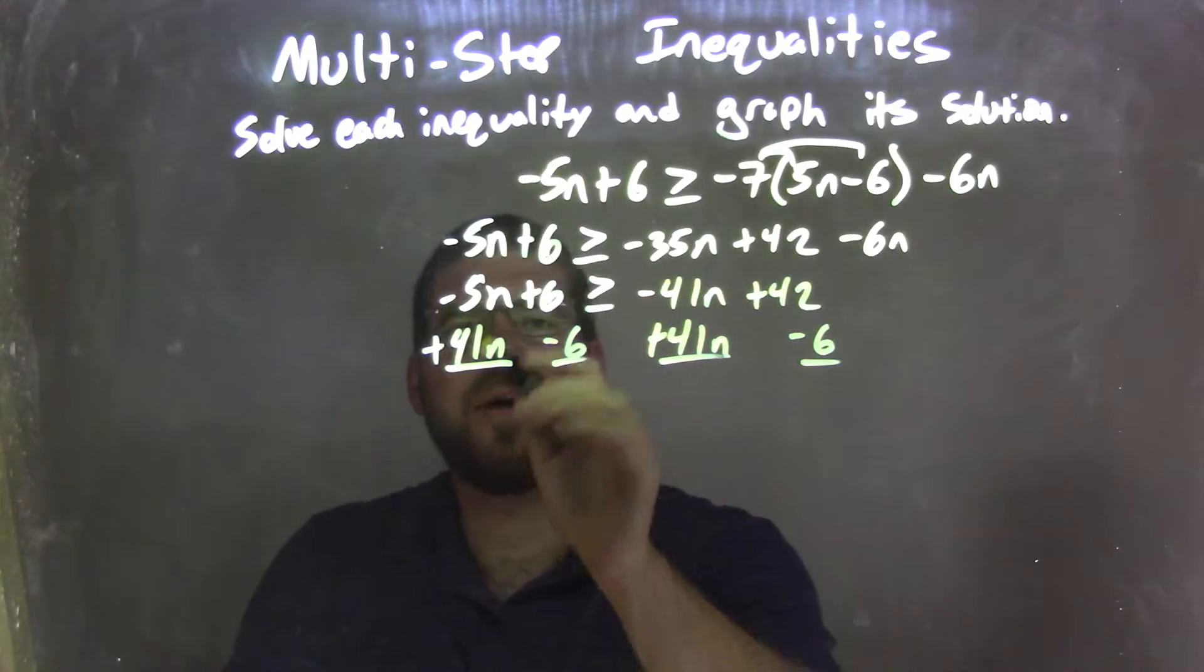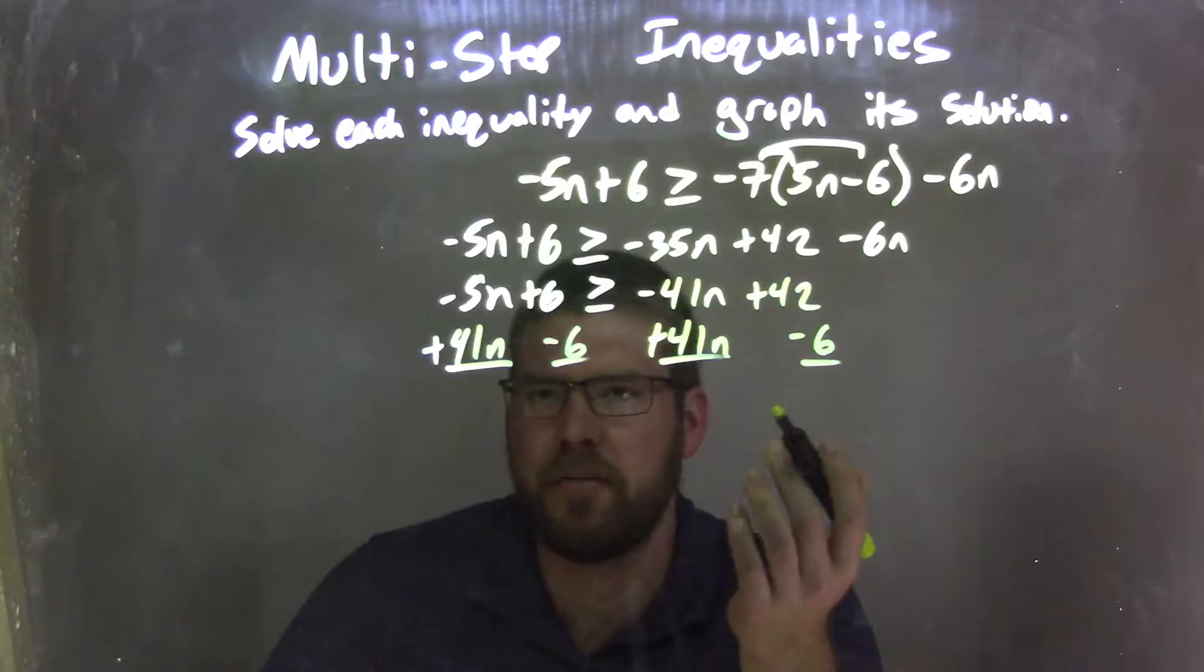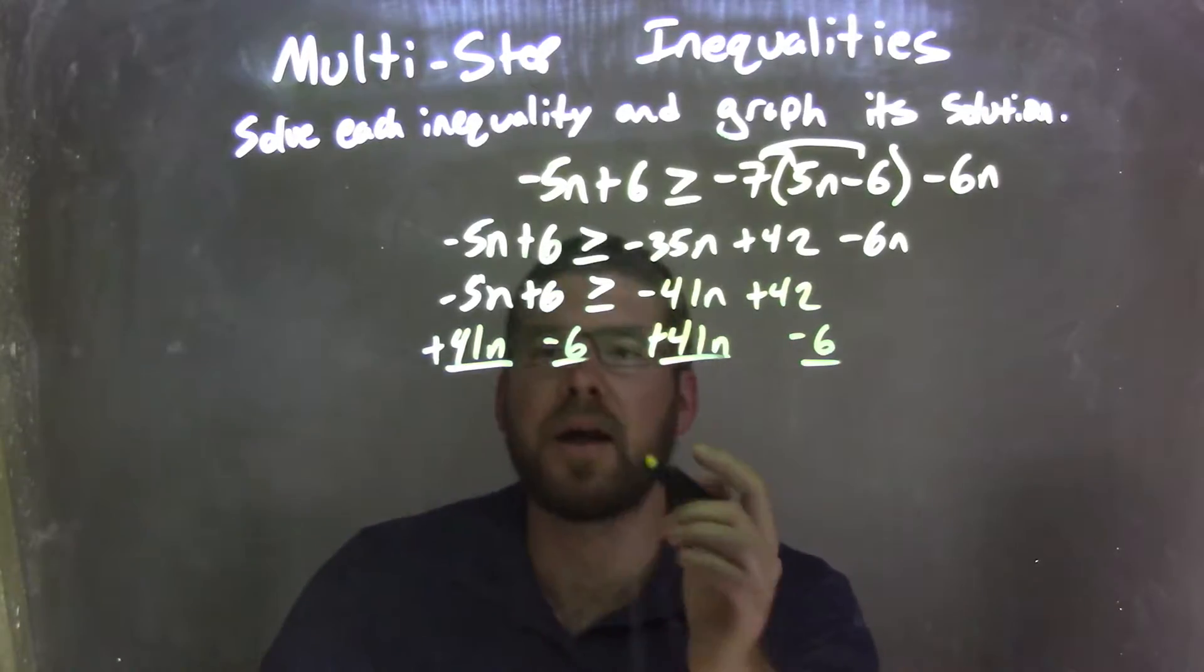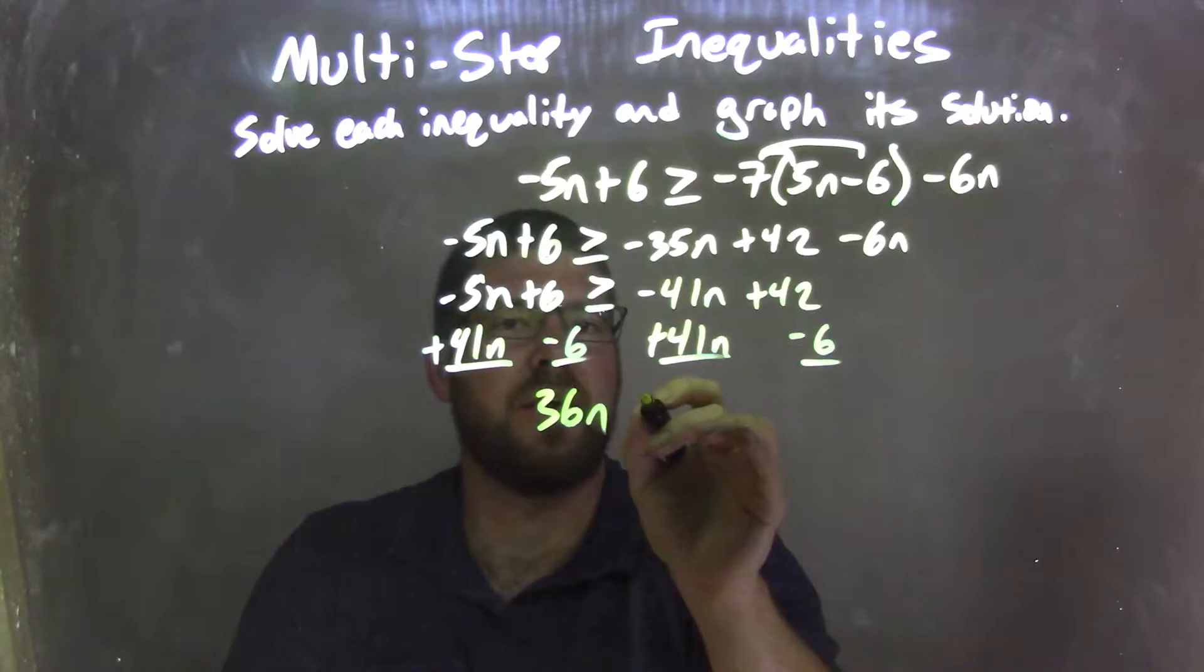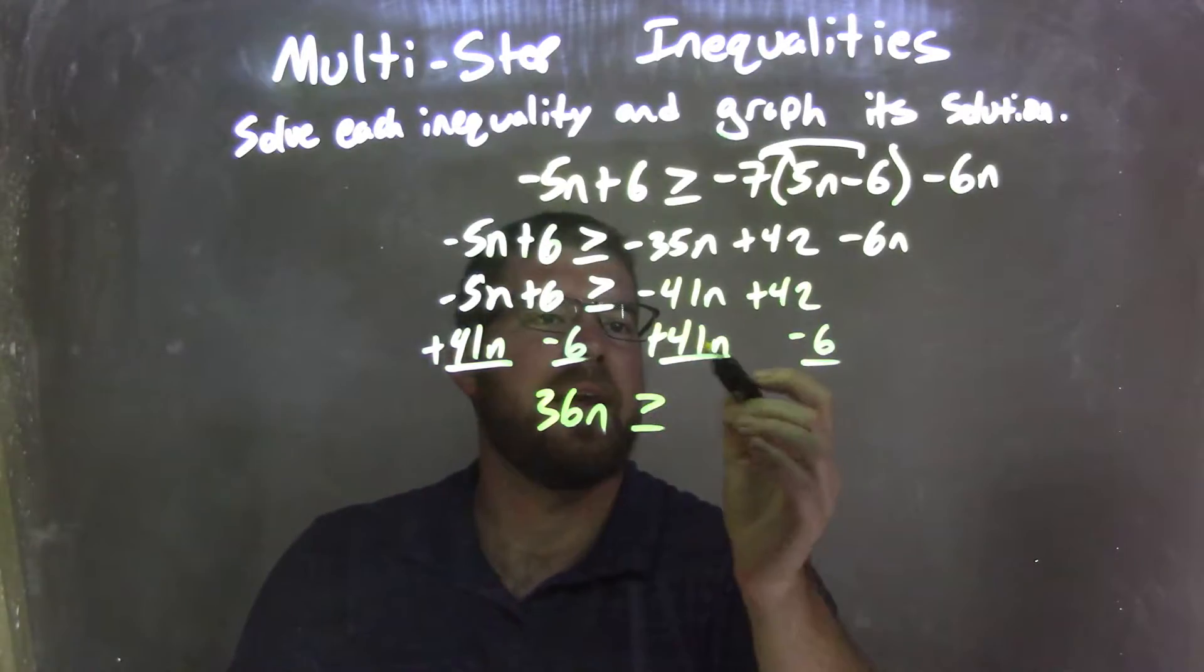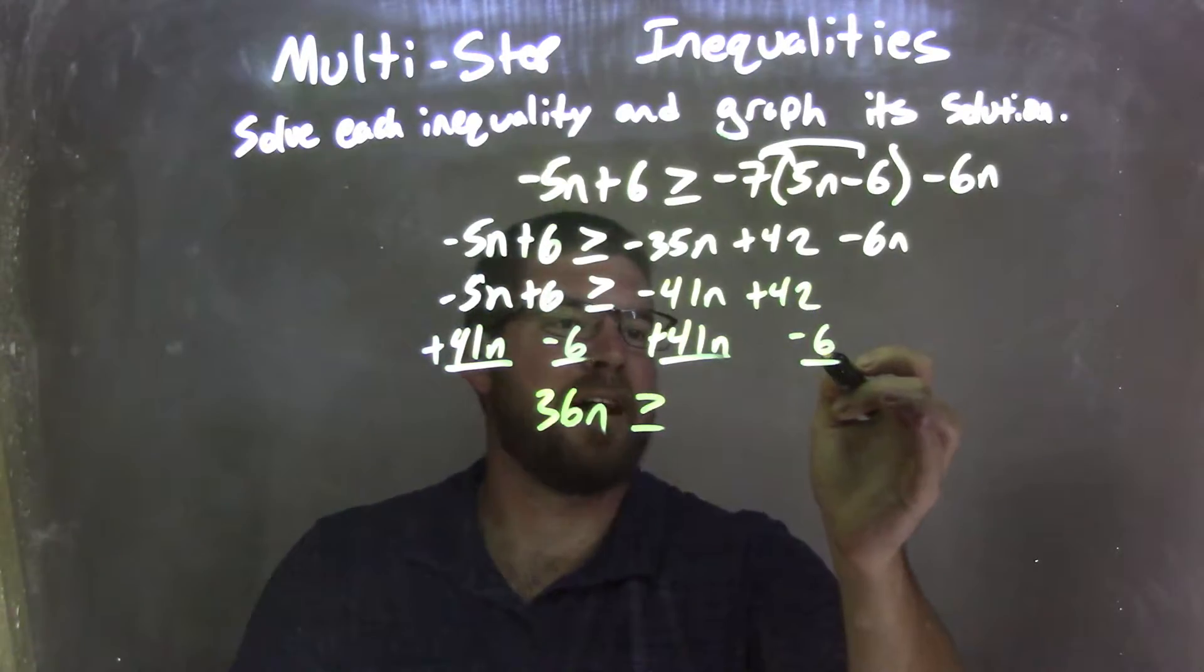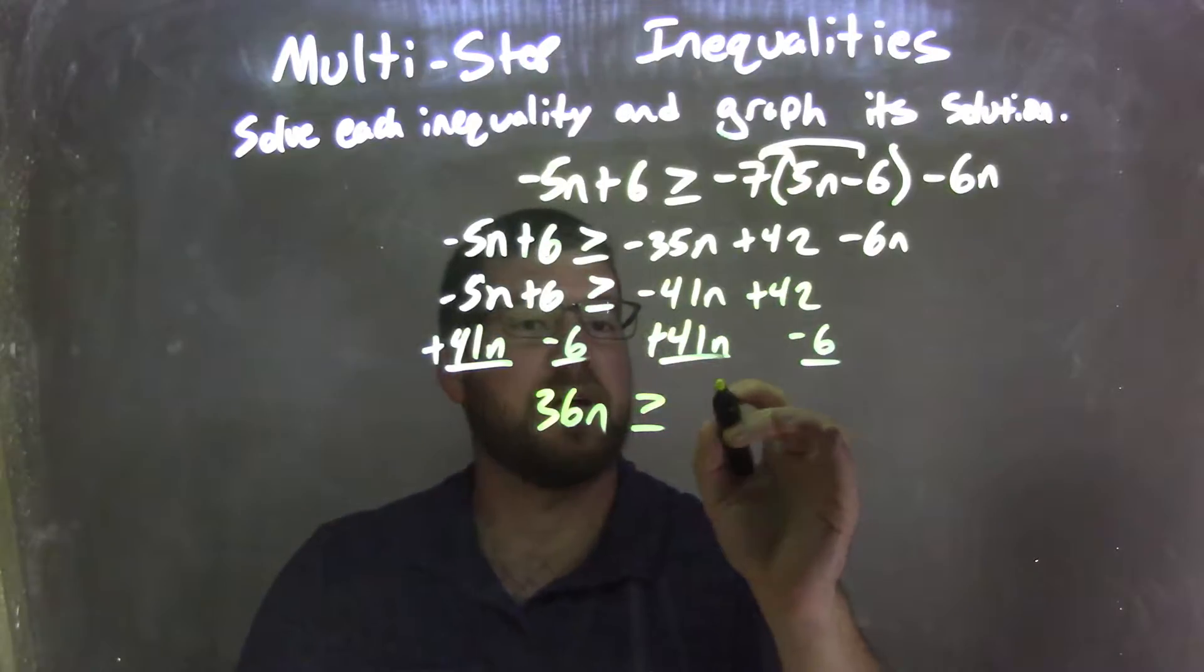Well, negative 5n plus 41n comes out to be 36n, positive 36. That's greater than or equal to, and then 42 minus 6, 42 minus 6 comes out to be a 36.